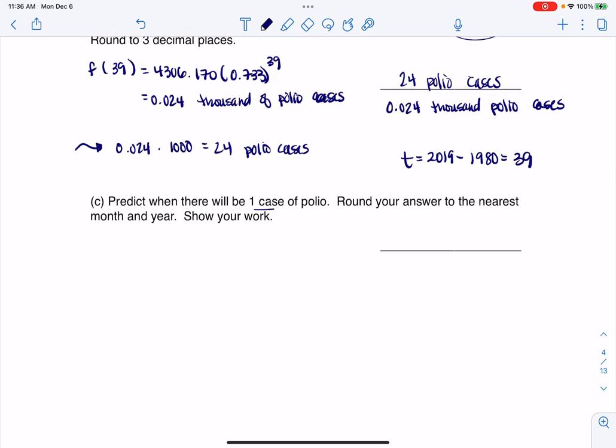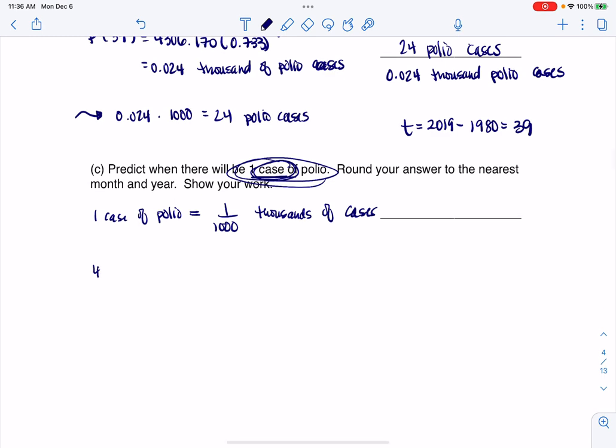Let's take a look here. It says predict when there will be one case of polio. I want you to take a look at the units here. This is cases, not thousands of cases. So we're going to have to convert that. If we have one case of polio, that's like saying one out of a thousand if we do thousands of cases. I have to convert those units because that's the original units for my function and the units we were using for our model.